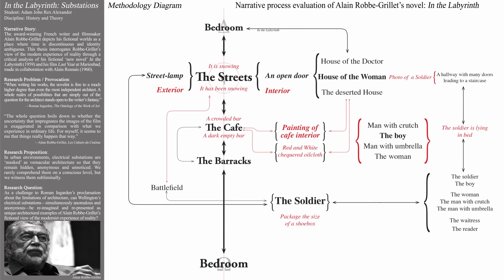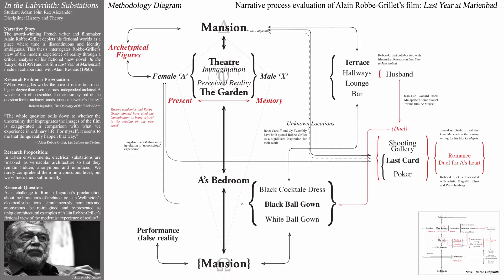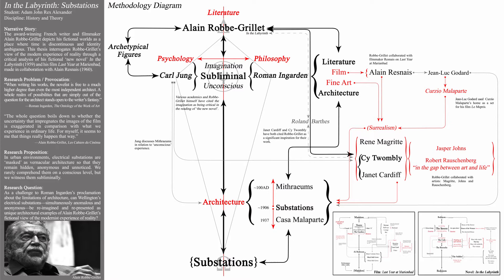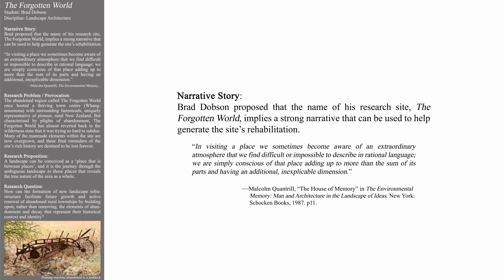During the development of this methodology diagram, Adam critically interrogated the narrative processes of Alan Roque-Grié's novel In the Labyrinth and Alan Roque-Grié's film Last Year at Marienbad. His ultimate methodology diagram drew directly from the interrogation of the novel, the film, and his thesis proposition. The diagram provided a clear sequential pathway for a multi-layered narrative research investigation, enabling Adam to explore the subliminal in relation to Wellington's substations through the combined disciplines of literature, film, fine art, and architecture.